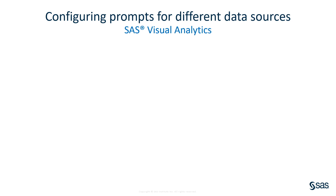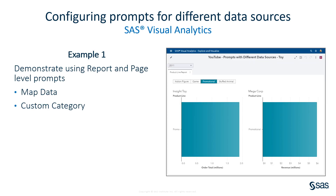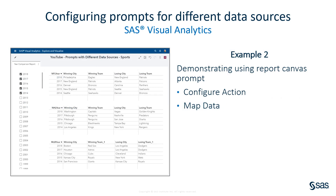In this video, I will demonstrate how to configure prompts for different data sources using SAS Visual Analytics 8.4, but similar steps can be used for earlier versions. My first example will demonstrate how to configure both report and page level prompts to filter different data sources. Two key concepts I will use are map data and creating a custom category to support those data mappings. My second example will demonstrate how to configure a report canvas prompt to filter multiple data sources, covering configuring the action to filter report objects and map data.